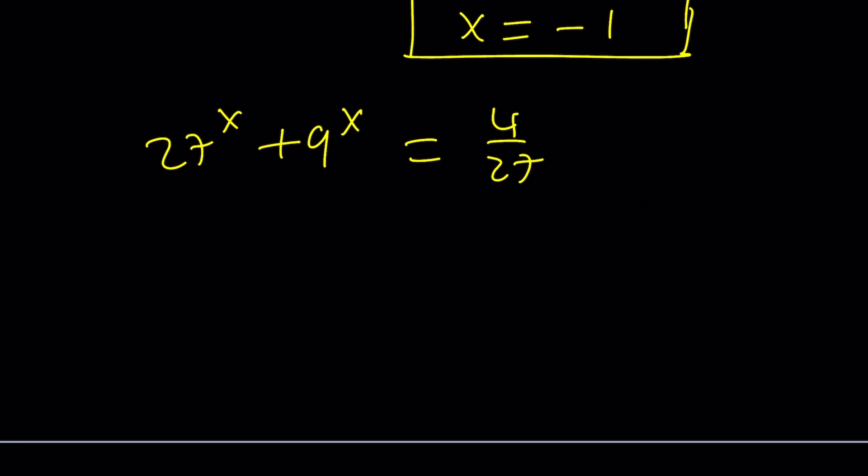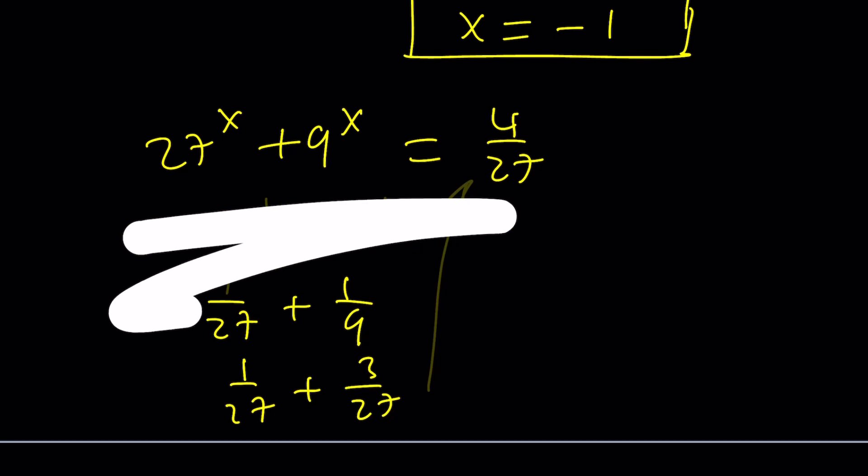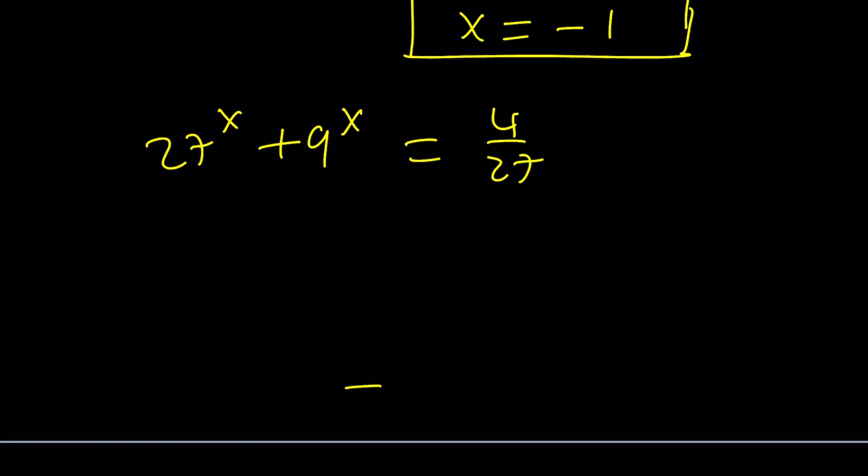Make sense? So x equals negative 1 is a solution, but is that the only solution? At the beginning I did not specify whether I'd be looking for real, complex, or all. We can go ahead and explore all solutions in this case, right? So x equals negative 1 is definitely going to satisfy. We can go ahead and check it out actually. So we have 27 to the x plus 9 to the x equals 4 over 27.